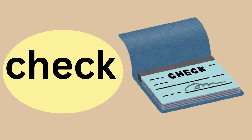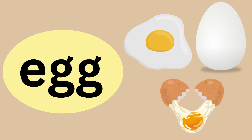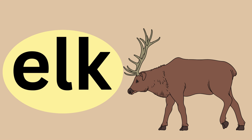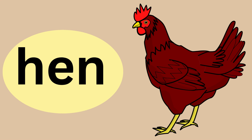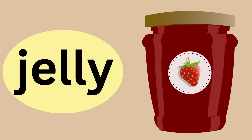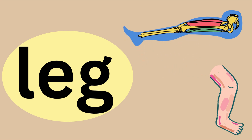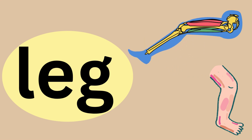Check — we sound it out as ch, e, k. Check. Short E says eh. Egg — we sound it out as eh, g, g. Egg. Short E says eh. Elk — we sound it out as eh, l, k. Elk. Short E says eh. Gem — we sound it out as j, i, m. Gem. Short E says eh. Hen. Short E says eh. Leg — we sound it out as l, e, g. Leg. Short E says eh.